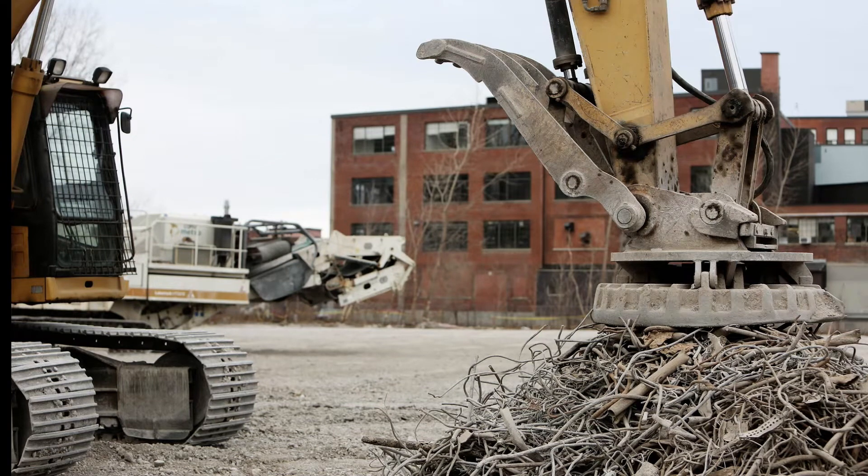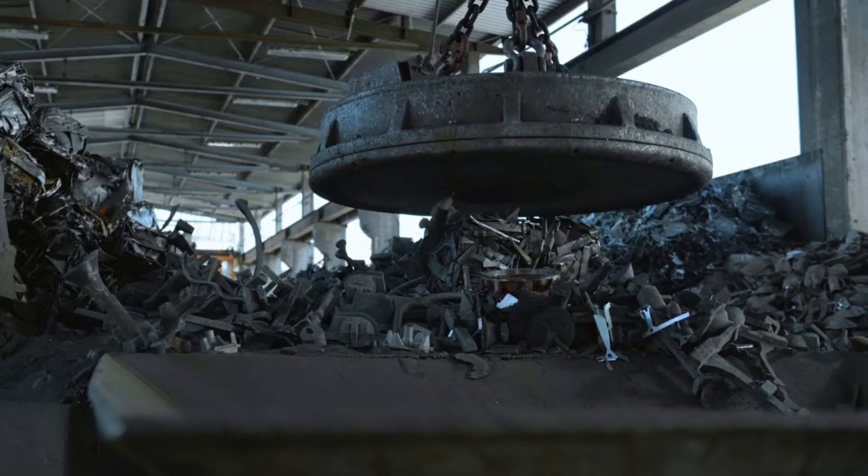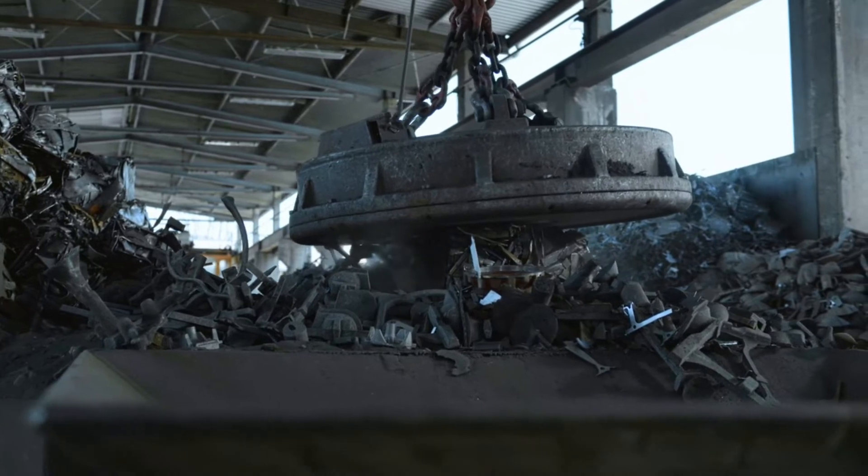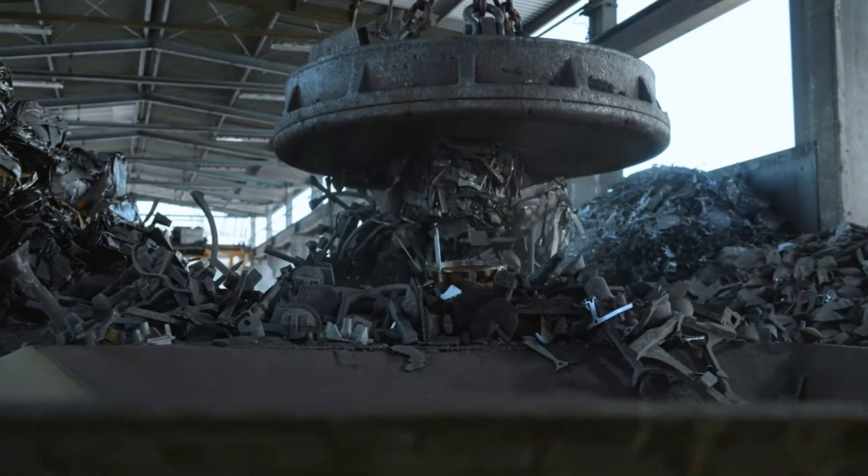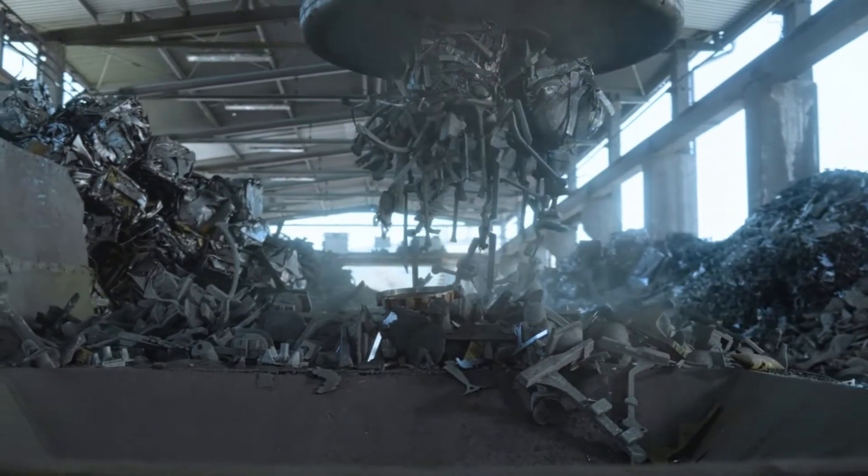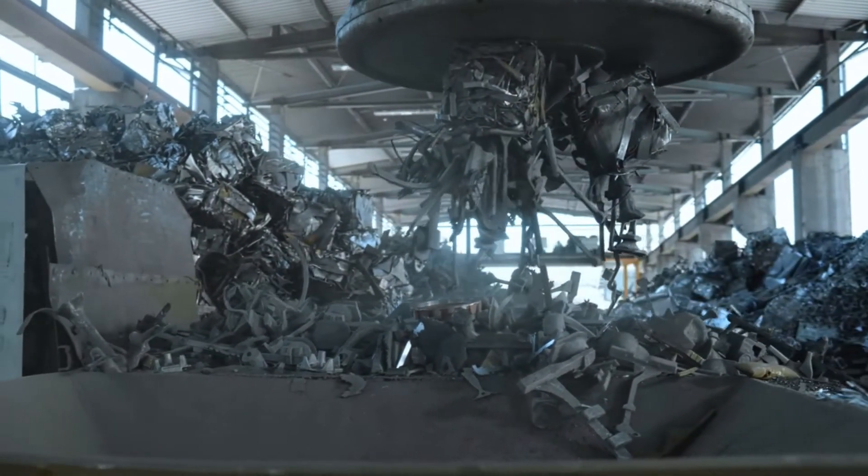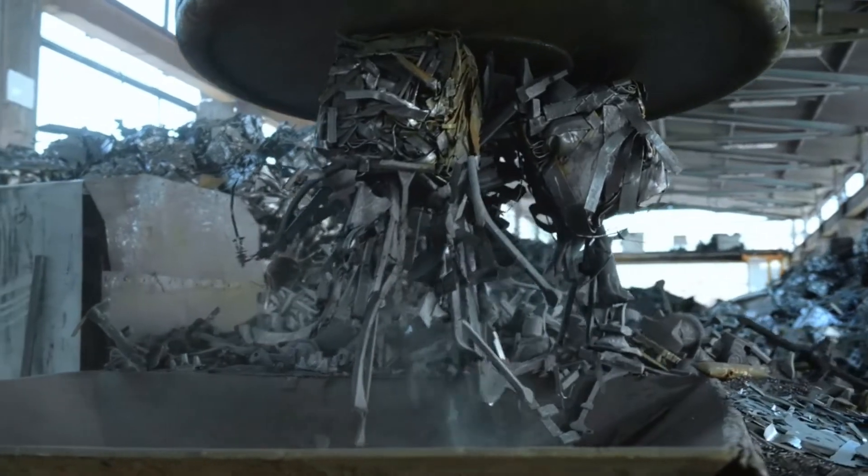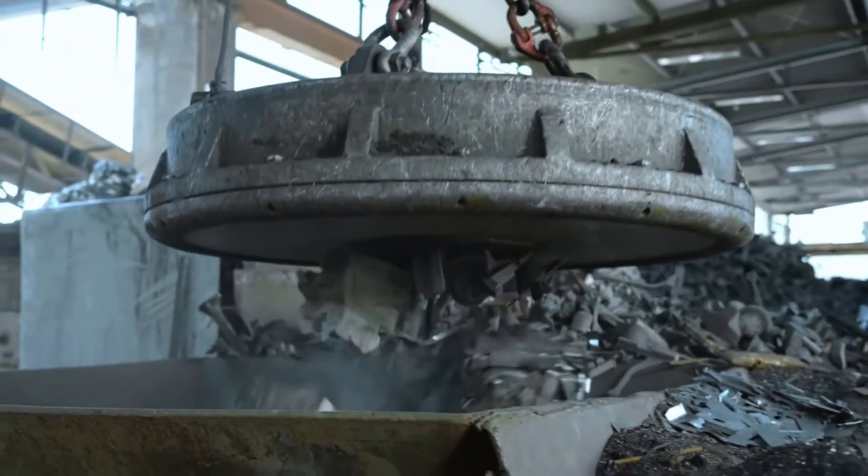This is an electric magnet connected to a crane. Unlike the permanent magnets that we showed earlier, an electric magnet can be turned off and on with a switch. When the crane operator wants to pick up metal, the operator turns the magnet on. When the operator wants to drop the metal, the operator turns the magnet off.